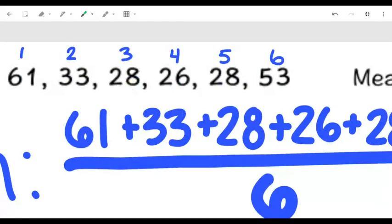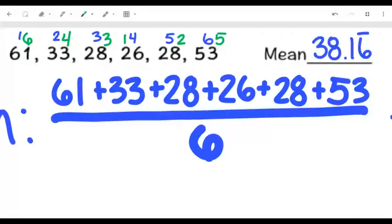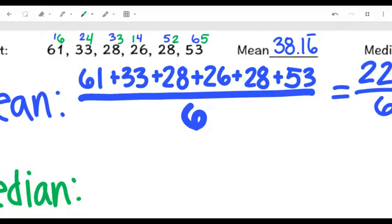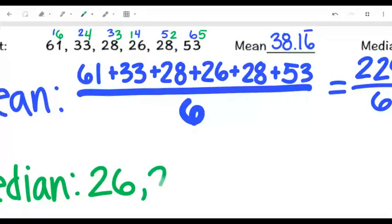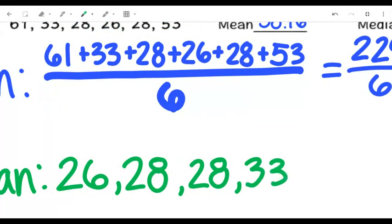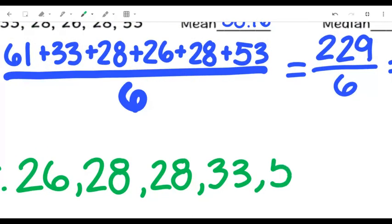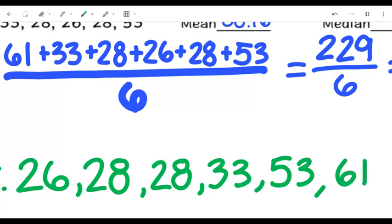So I go back in. I've got my green color to make sure that we are differentiating. And now, if I'm going to find the median, I need to arrange the numbers in order first. So let's look at this. I'm going to write which one comes first, which one comes second, so on and so forth. If I look here, 26 is my smallest number. Next is going to be 28, the other 28, 33, 53, and last but not least, 61. Now I'm going to write those right up there. So I've got 26, 28, another 28, 33, 53, and 61.